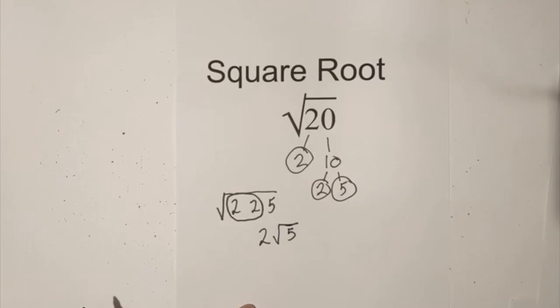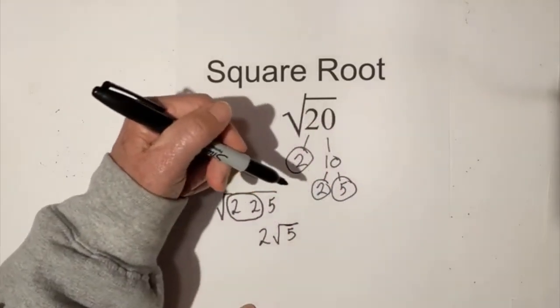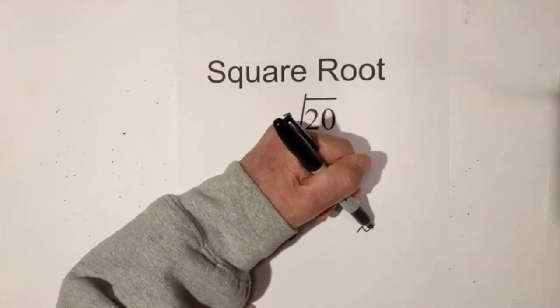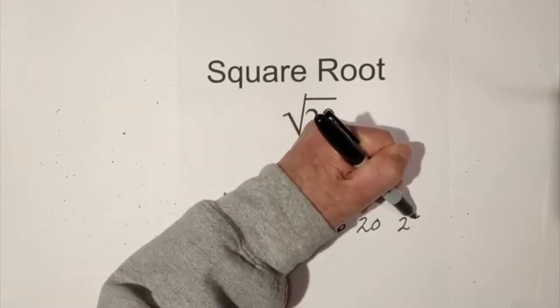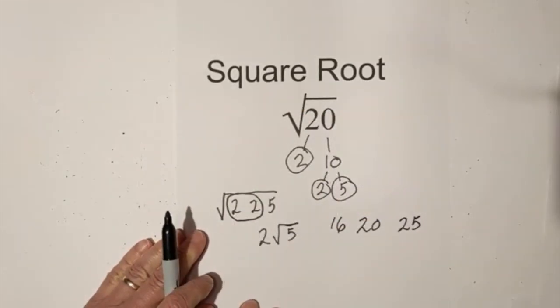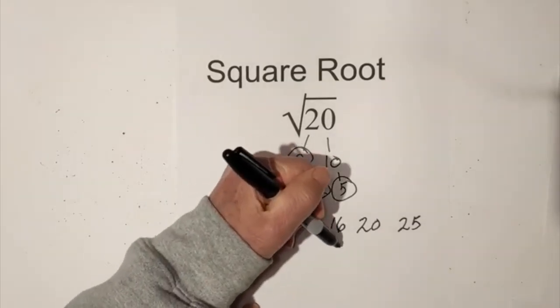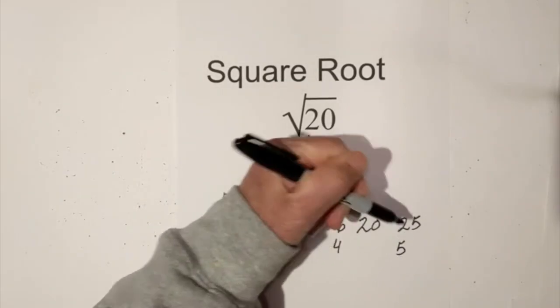Now let's figure out a way to ballpark this. So we have 20 here and 16 is a perfect square and 25 is a perfect square. So the square root of 16 is 4 and the square root of 25 is 5.